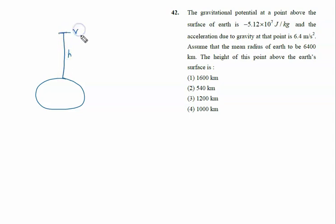At this point, this is point P, the potential is given by minus 5.12 times 10 raised to the power 7 joules per kilogram.